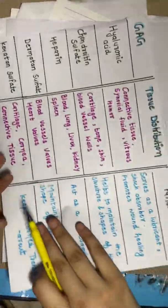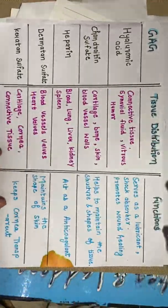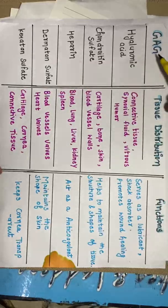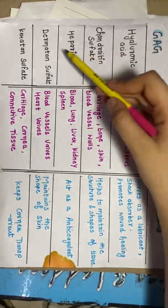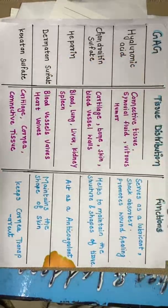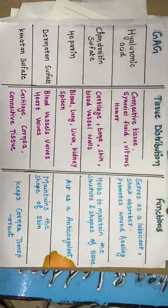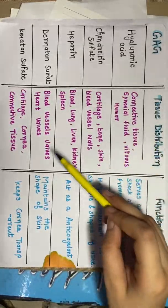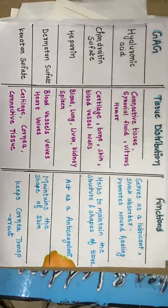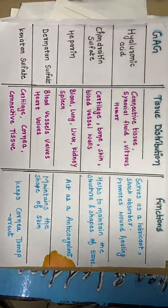Finally, there is a summary table covering all five types of GAGs, their tissue distribution in mammalian tissue, and their functions. This concludes the topic of heteropolysaccharides.